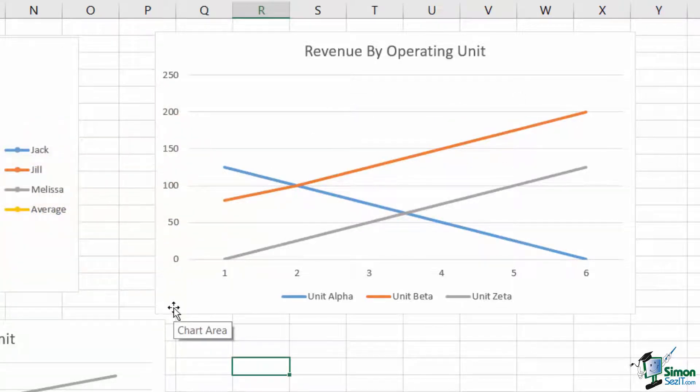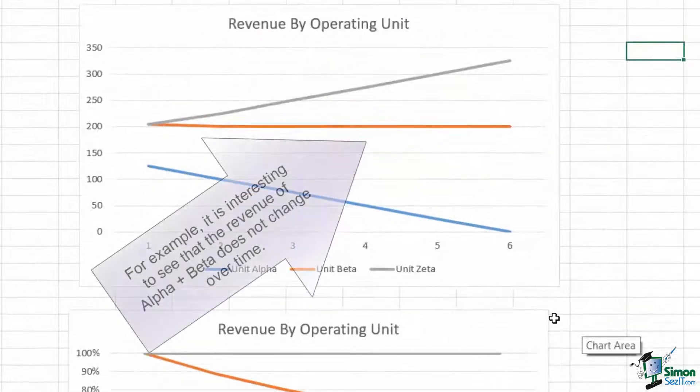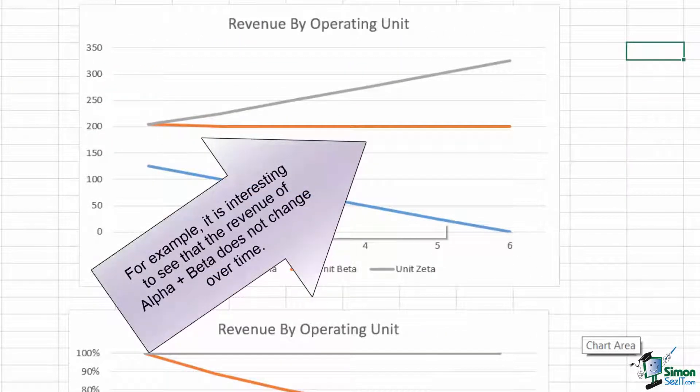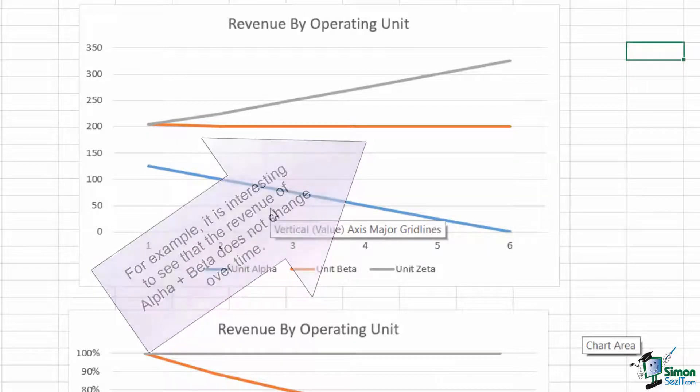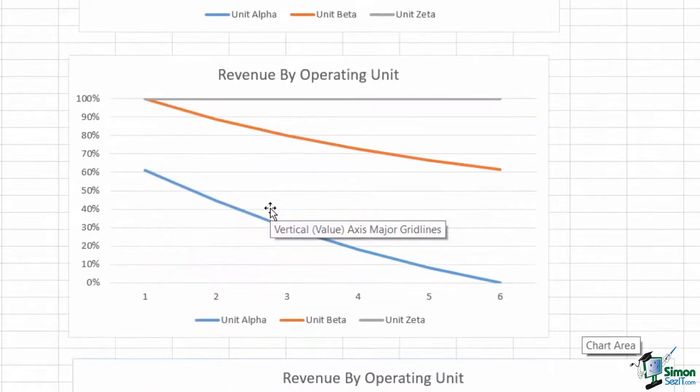The standard line chart shows how each unit performs on its own. The stacked chart gives us an idea as to how the total is changing, as well as the directional shift of the underlying units relative to the total. And finally, the stacked 100% chart shows us how the changing percentage distribution occurs.